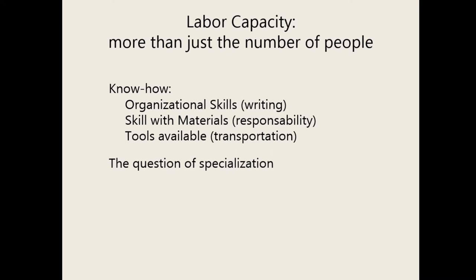Labor capacity also leads us to the question of specialization. Being able to build in stone, as this palace demonstrates, means the ability to quarry large numbers of blocks, to float those stones on waterways, and to transport them. Considering labor capacity means also looking at questions of specialization — not only the ability to do those individual things, but also the ability of the society to support people who do just that.